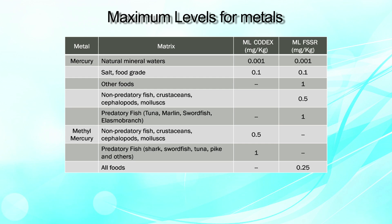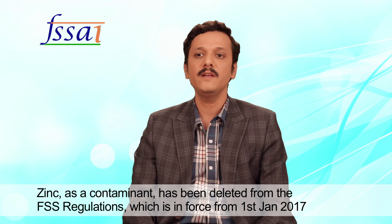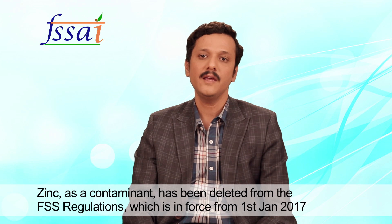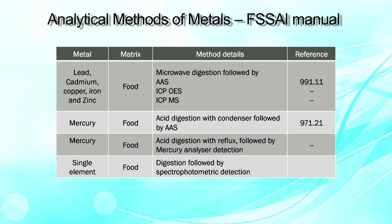Zinc, until now, was considered as a heavy metal contaminant with a limit of around 50 ppm. However, it has been observed that many food products do contain zinc as a naturally occurring element up to 65 to 70 ppm — for example, in cocoa beans. When this was reported to FSSAI, they positively came up with a new guideline and omitted zinc as a heavy metal contaminant. Now we also need to look at the analytical methods for detecting these heavy metals.